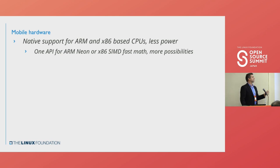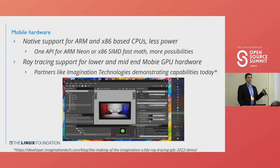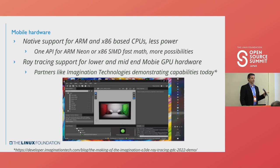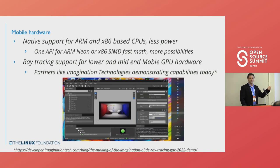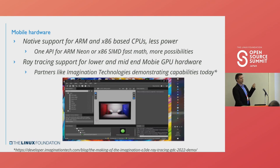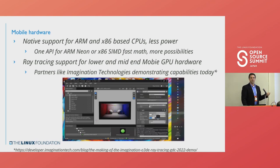Or you can ship on Android or iOS. That means using CPUs with less power, using Neon and SIMD for fast math computations, and ray tracing support for lower and mid-end mobile GPUs. Imagination Technologies has shown ray tracing running natively on these GPUs today. So you have this Apache-licensed, open-source, full-source-code engine that already supports the hardware you're running on today with advanced features you'd expect only on a top-end Samsung or Apple phone — but it's already there for you.